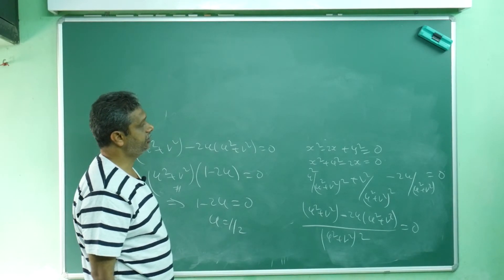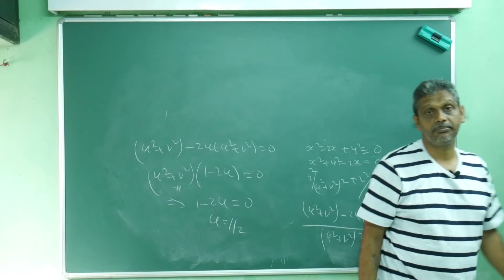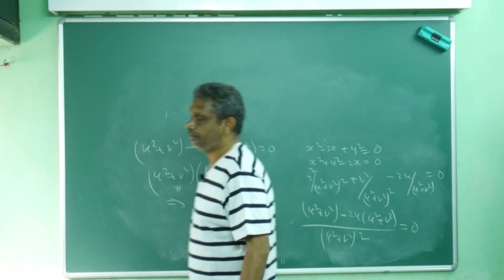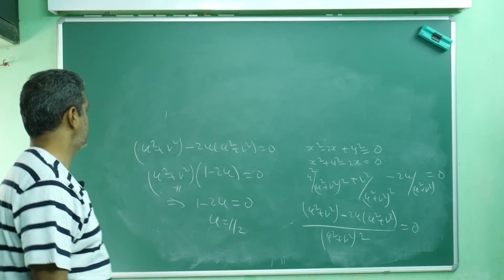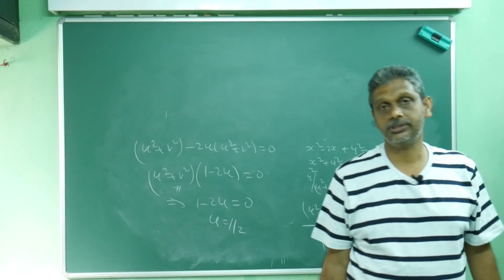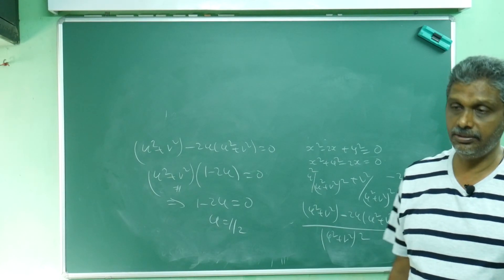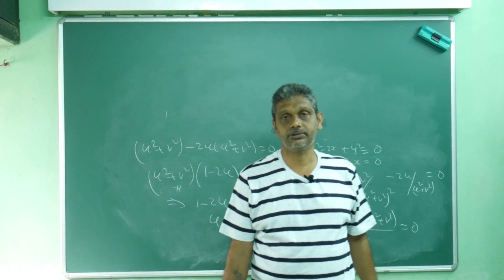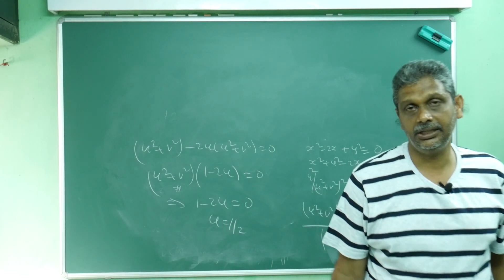So the circle with center at (1, 0) and radius 1 in the z-plane maps onto the w-plane as the straight line u = 1/2. This is the way of doing it. Thank you for watching our channel; kindly subscribe. We do all units of mathematics. We are also going to start live streams for classes 10, 11, and 12 soon in summer. Thank you, bye.